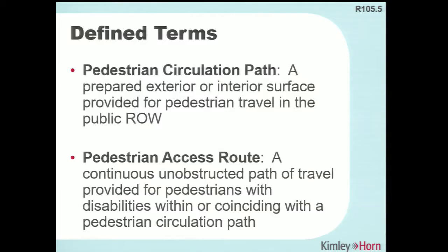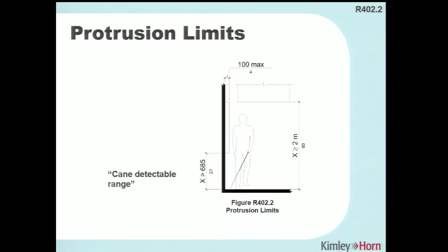Moving on to protruding objects: the continuous width for the pedestrian access route only needs to be four feet, but if you have a 10-foot sidewalk, the pedestrian circulation path is the full 10 feet. Protruding object requirements apply to the entire pedestrian circulation path, not just the four-foot access route, because a pedestrian could walk or roll anywhere within that width. The cane-detectable range is 27 inches above the finished surface — if something protrudes from the side, the cane can feel for obstructions at or below that height.